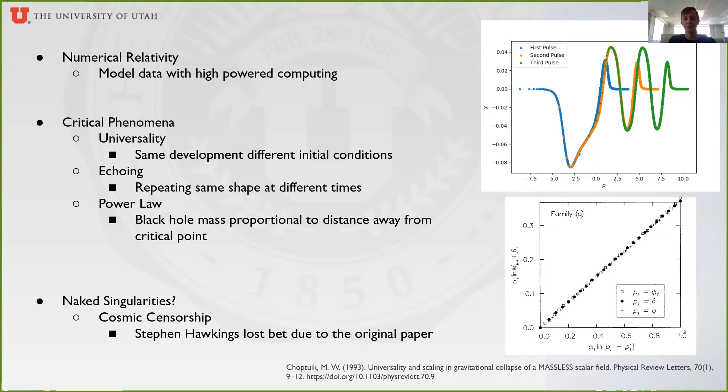This can actually lead to infinitesimal mass black holes, which wouldn't have an event horizon, leading to a naked singularity. This is actually against the cosmic censorship hypothesis, which predicts that a naked singularity is not possible.